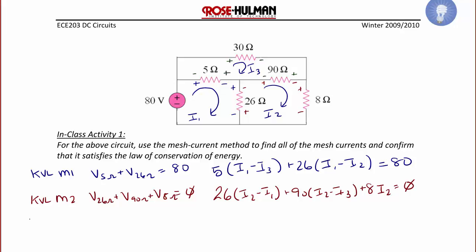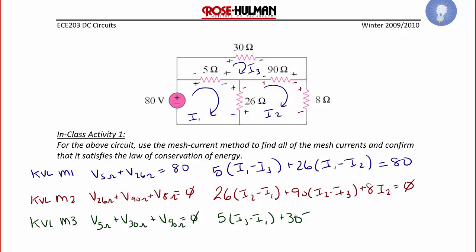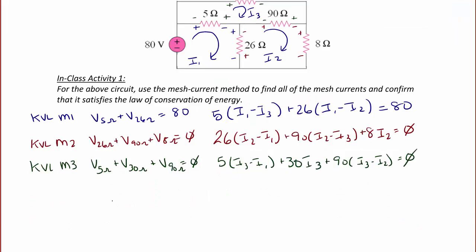Finally, KVL for mesh 3, also all voltage drops: 5 times (I3 minus I1) plus 30 I3 plus 90 times (I3 minus I2) equals zero, where 30 I3 is used because the 30 ohm is a branch current. There are several ways to solve this system of equations, including Cramer's rule, substitution, addition, subtraction, or graphing, but the easiest way is to use your calculator — either entering equations directly or doing matrix manipulation.